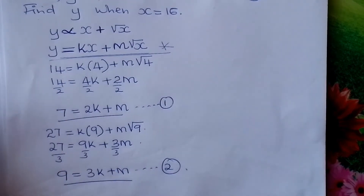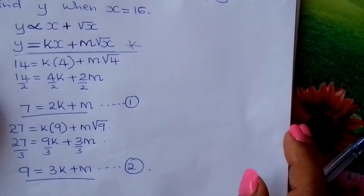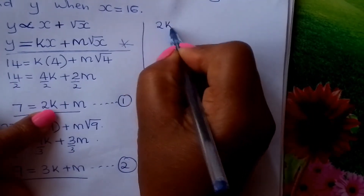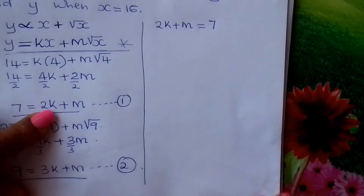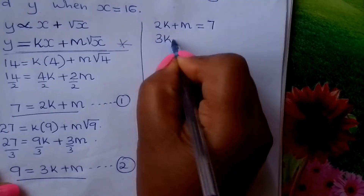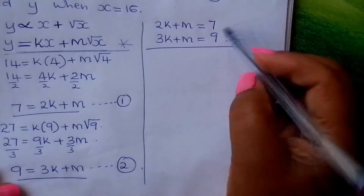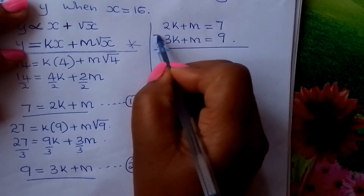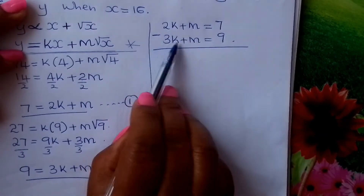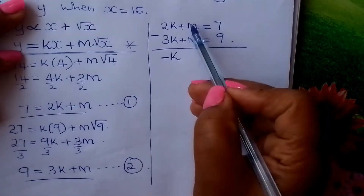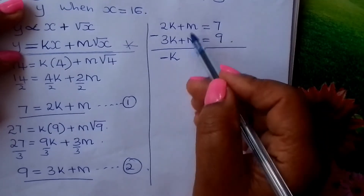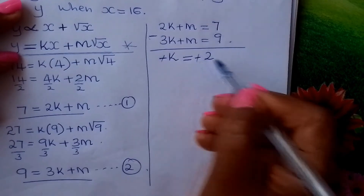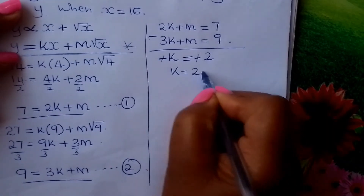We now solve these two simultaneous equations to get K and M. We have: 2K + M = 7, and 3K + M = 9. Solving by elimination — subtracting the first from the second — 2K minus 3K gives minus K, M minus M cancels out, and 7 minus 9 gives minus 2. The negatives cancel, so K equals 2.